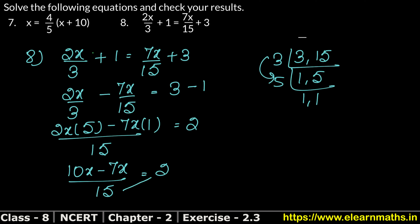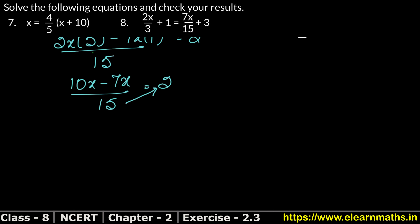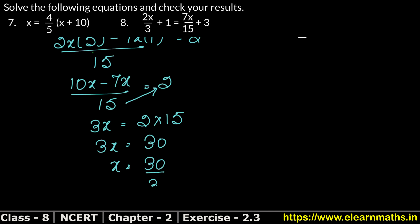Bring 15 to the other side by multiplying. 10x minus 7x is 3x, equals 2 multiplied by 15 which is 30. So 3x equals 30. Dividing: 3 tens are 30, so x equals 10.